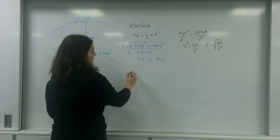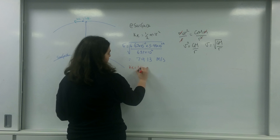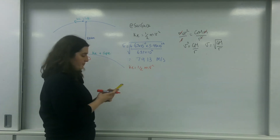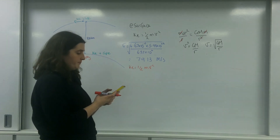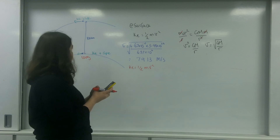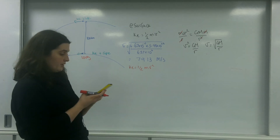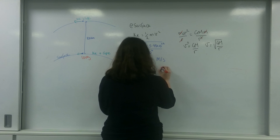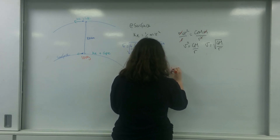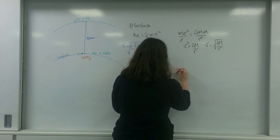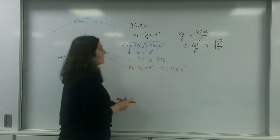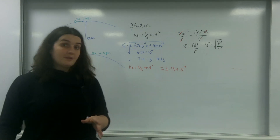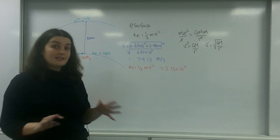Now let's put this into kinetic energy. I'm going to square that velocity, times by 100 kg, divided by 2. So that's the kinetic energy at the surface — that's the first part.